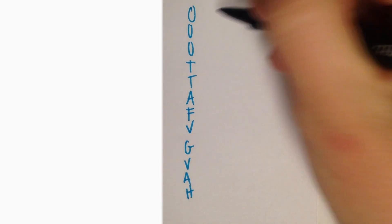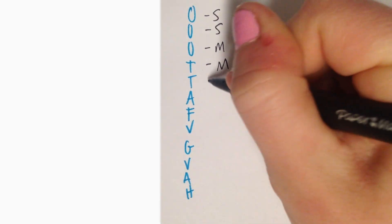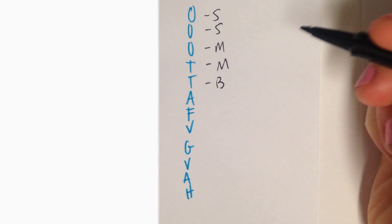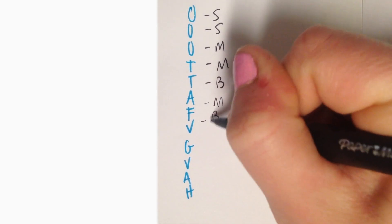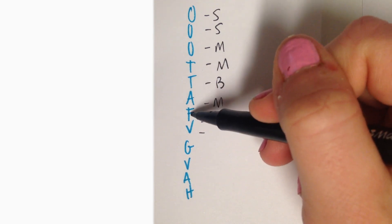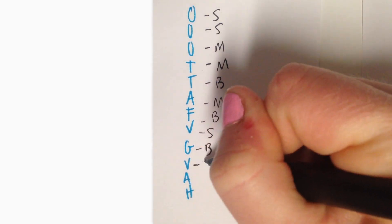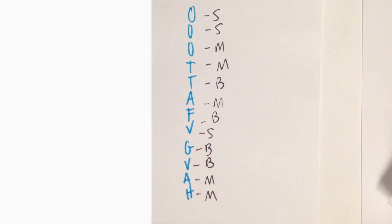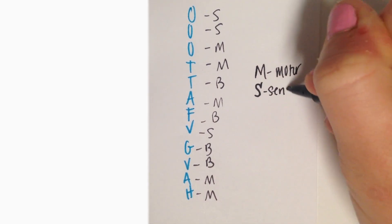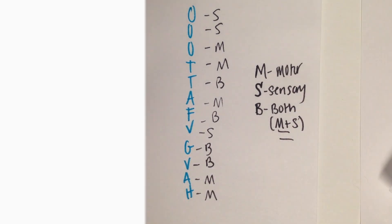There's an easy way to remember which cranial nerves have sensory fibers, which have motor fibers, and which have both. Starting at the top: sensory, sensory, motor, motor — and you can use the mnemonic. Some say 'merry money, but my brother says big brains matter most.' M stands for motor, S stands for sensory, and B is both motor and sensory.